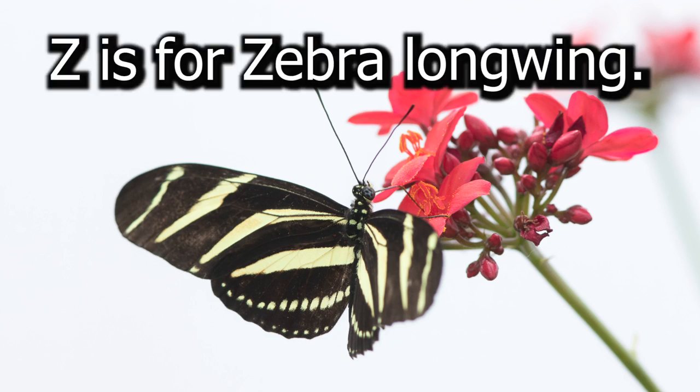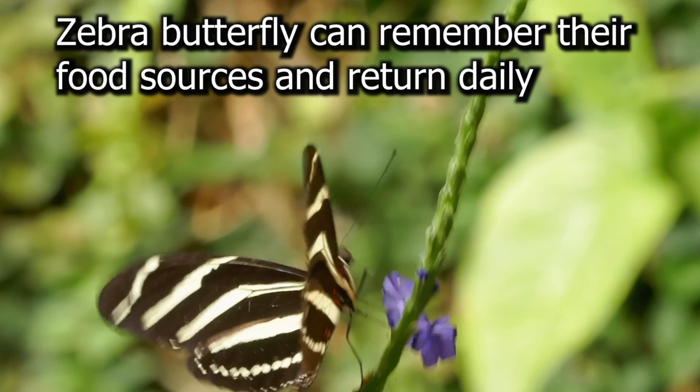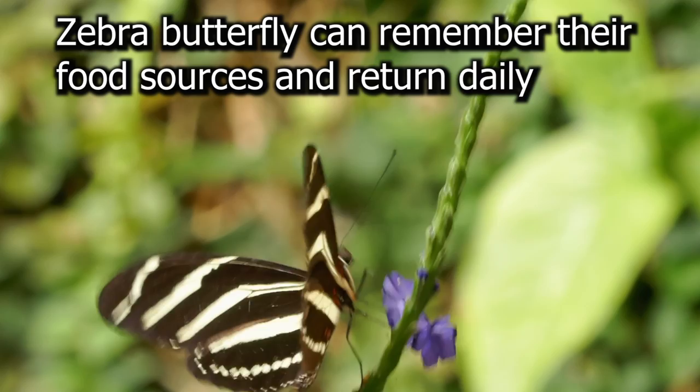Z is for Zebra Longwing, known for being very intelligent insects. Zebra Butterflies can remember their food sources and return daily to the plants where they fed previously — a behavior known as traplining.